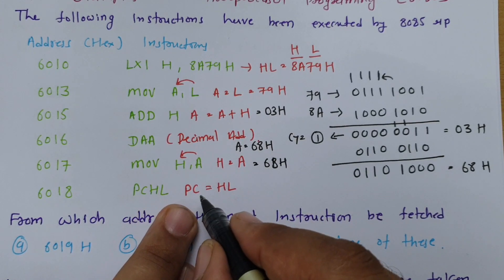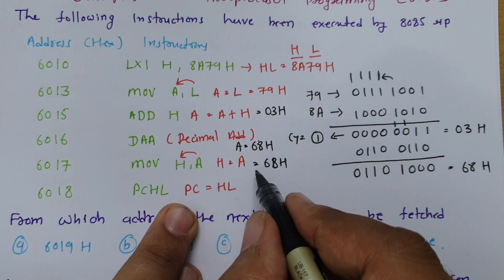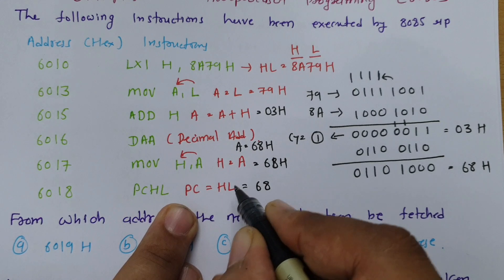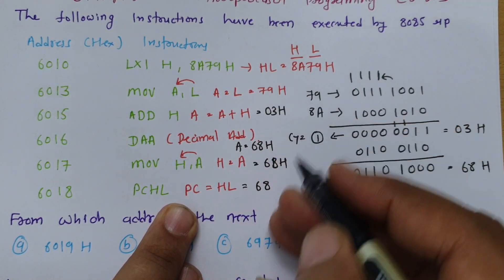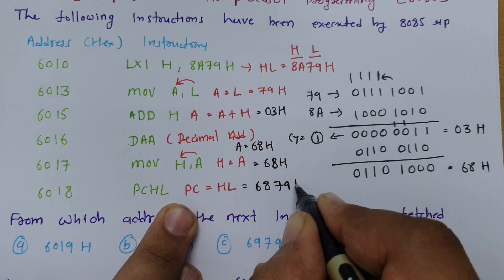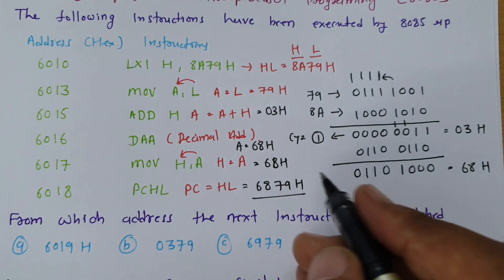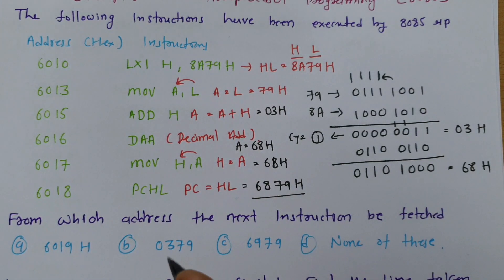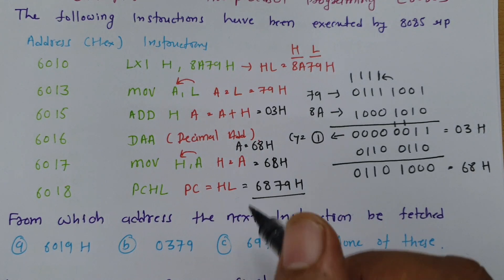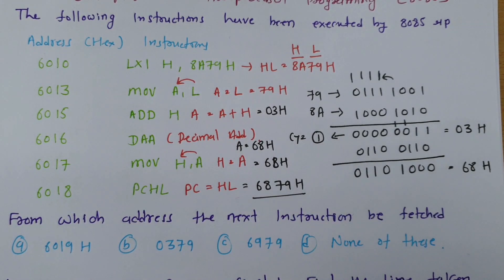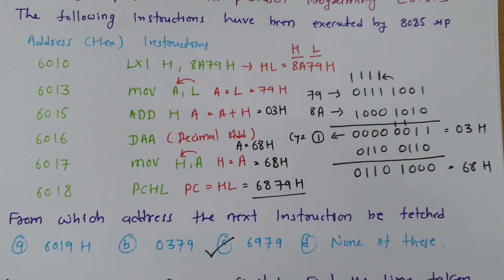Now we move A into H, so H equals 68H. Then PCHL means the program counter is loaded with the HL pair. H is 68 and L is 79, so the program counter becomes 6879 hex. The next instruction will be fetched from memory location 6879H. So the correct option is C.